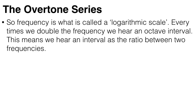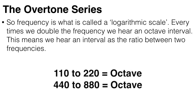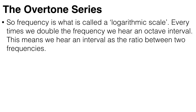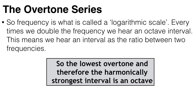So frequency is what is called a logarithmic scale. Every time we double the frequency we hear an octave interval. Even though the difference between 220 and 110 is less than the difference between 880 and 440, we still hear the same interval between the notes. This means we hear an interval as the ratio between two frequencies. So the lowest overtone, and therefore the harmonically strongest interval, is an octave.